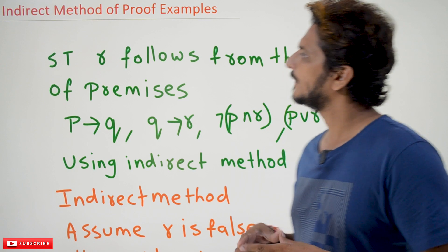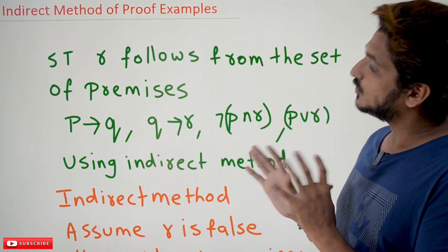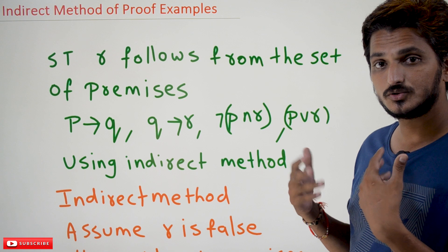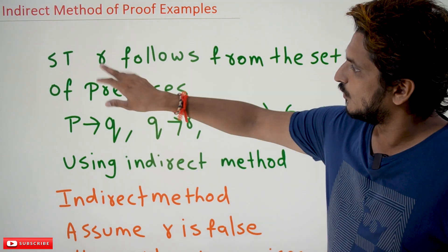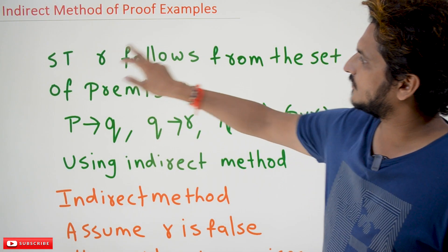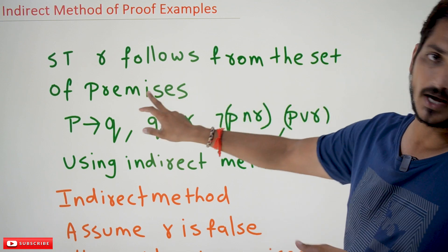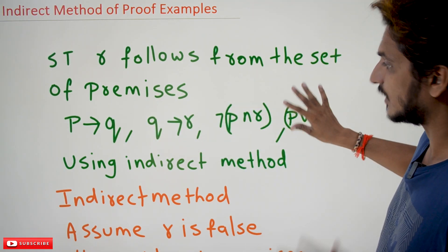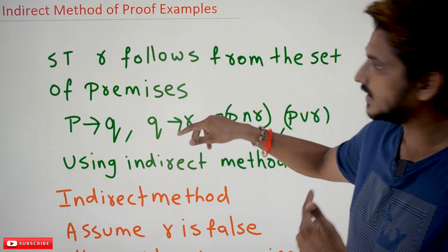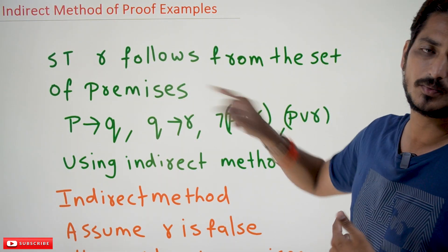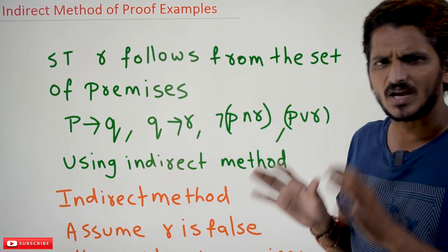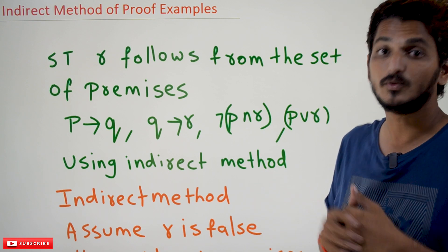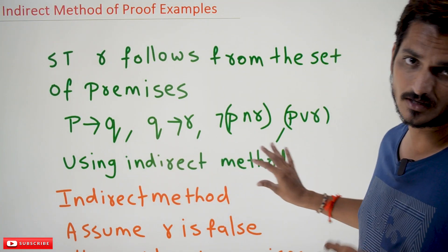Coming to today's class, suppose sometimes they are going to ask you to show the derivations based on the indirect method. One of the examples: show that R follows from the set of premises. They have provided some set of premises, and from these premises we need to show that R follows. These type of examples we have done in our previous classes, but we need to show it using indirect method.